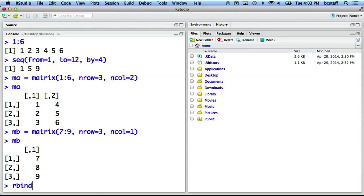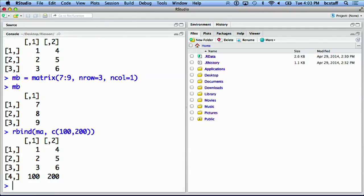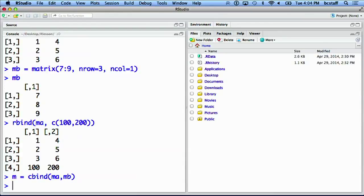Here, we can bind rows of ma with a new vector, or we can also save binding ma and mb into m. Here, now the m has columns of ma and columns of mb.